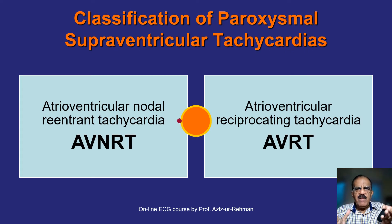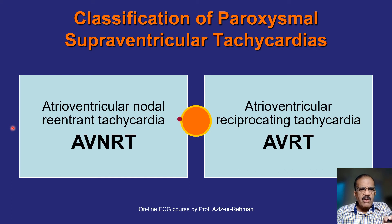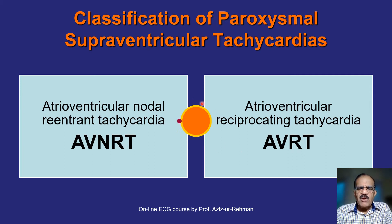Now I will discuss the very interesting condition of paroxysmal supraventricular tachycardia. There are two types, both based on an underlying phenomenon called re-entry. The first is AV nodal re-entrant tachycardia, where the re-entry circuit is within the AV node. The second is atrioventricular reciprocating tachycardia, where the re-entry cycle is outside the AV node, involving an anomalous pathway called the bundle of Kent.